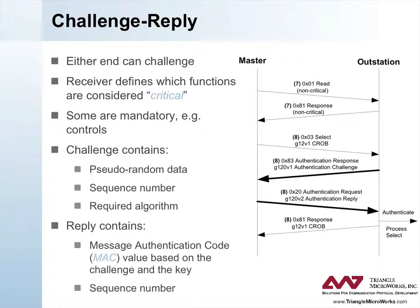If the MAC is valid, the outstation replies with the control relay output block, or CROB, response that the master was originally expecting. Note that DNP3 sequence number rules continue to apply. The entire select sequence uses the same DNP3 sequence number — in this case 8 — including the challenge and the reply. Note also that the select was preceded by a read operation, which the outstation considered to be non-critical, and therefore did not challenge.